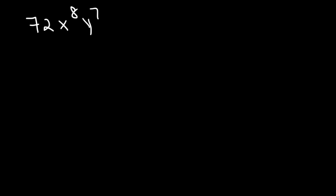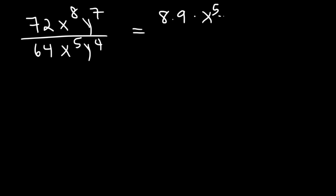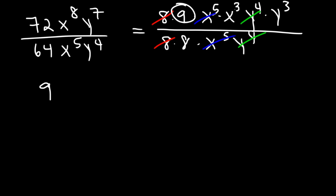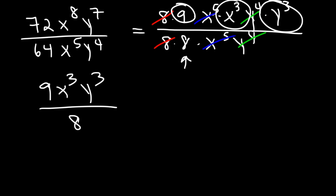Based on the examples covered, try these practice problems. Simplify the expression: 72x to the 8th, y to the 7th, divided by 64x to the 5th, y to the 4th. 72 is 8 times 9. x to the 8th is x to the 5th times x cubed, since 5 plus 3 is 8. y to the 7th is y to the 4th times y cubed. 64 is 8 times 8. We can cancel an 8, cancel x to the 5th, and cancel y to the 4th. So the final answer is 9x cubed y cubed over 8.